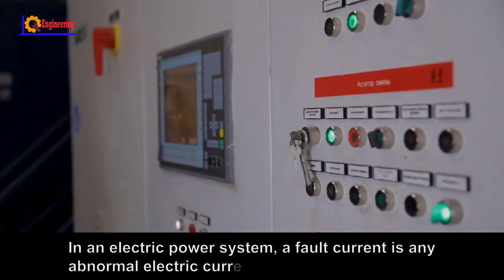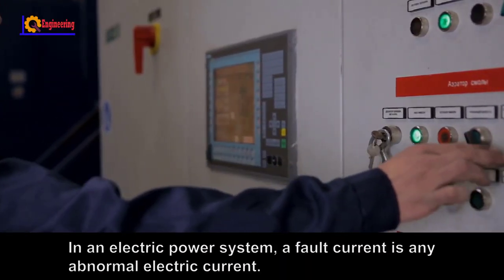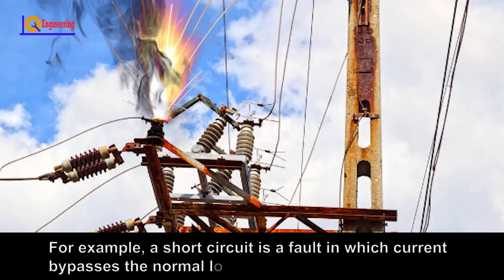In an electric power system, a fault is an abnormal electric current. For example, a short circuit is a fault in which current bypasses the normal load.